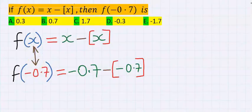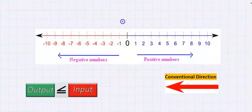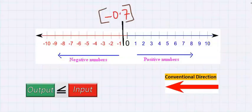Next, consider the greatest integer function of minus 0.7. Minus 0.7 is in between 0 and minus 1, and conventionally the direction of greatest integer function is always towards the left, and the next integer after minus 0.7 is minus one.